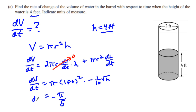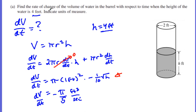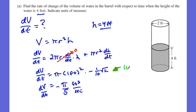The units are feet cubed per second, since it's the change in volume over the change in time. Part A is worth two points: one point for establishing the relationship dV/dT = π r² dH/dT, and one point for the correct answer with units.